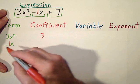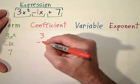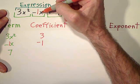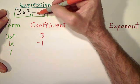The coefficient, now in this case, the coefficient is negative 1. If this had been 3x squared plus x, the coefficient would be a positive 1.